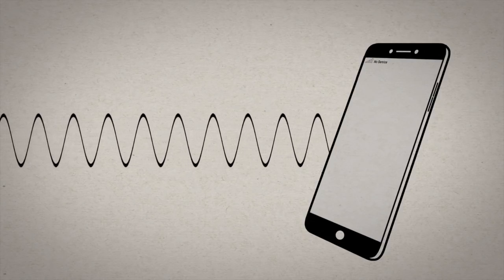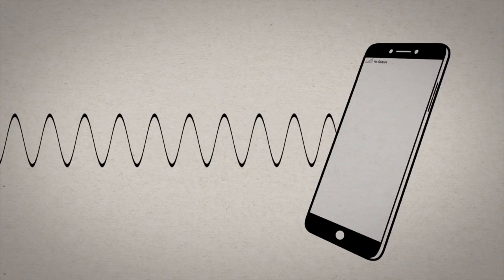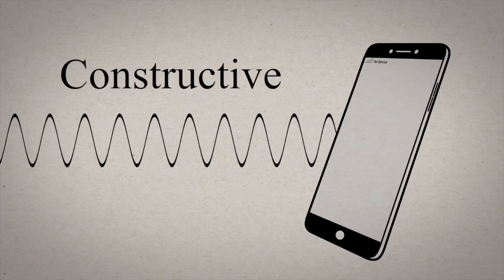If the waves arrive at the same time, then the third wave is amplified, resulting in a very strong signal known as constructive interference. It's the good kind of interference.